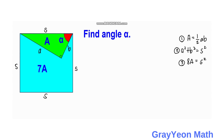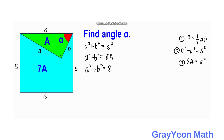Using the second equation, A squared plus B squared equals S squared, and since S squared equals 8A, we substitute to get A squared plus B squared equals 8A. Since 8A equals 8 times one-half AB, this simplifies to A squared plus B squared equals 4AB.